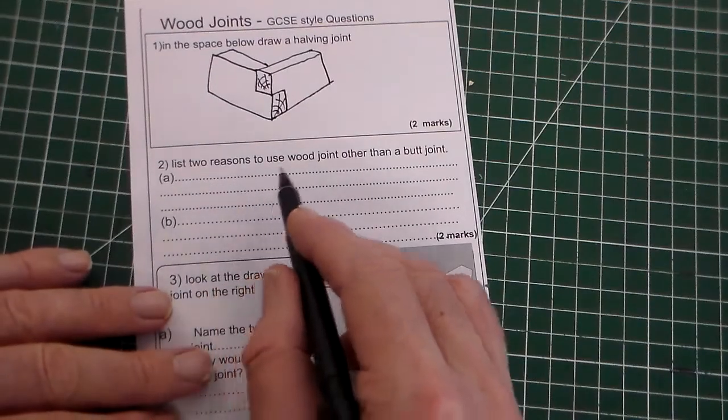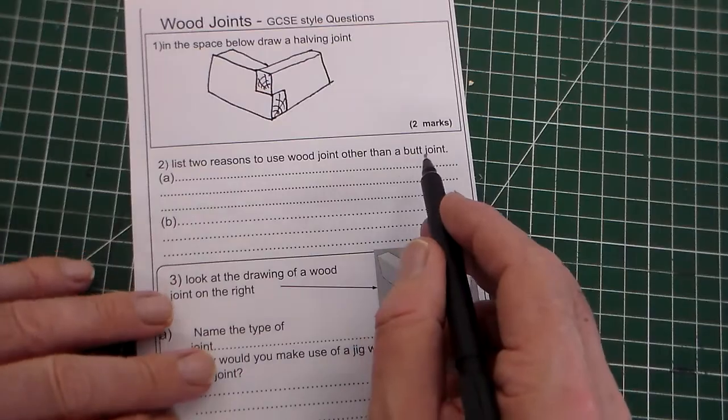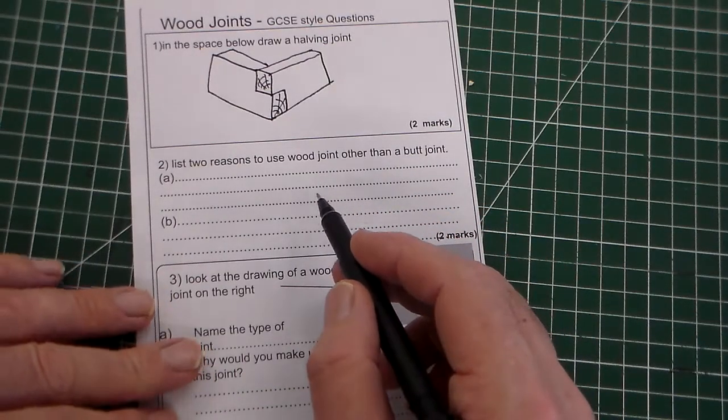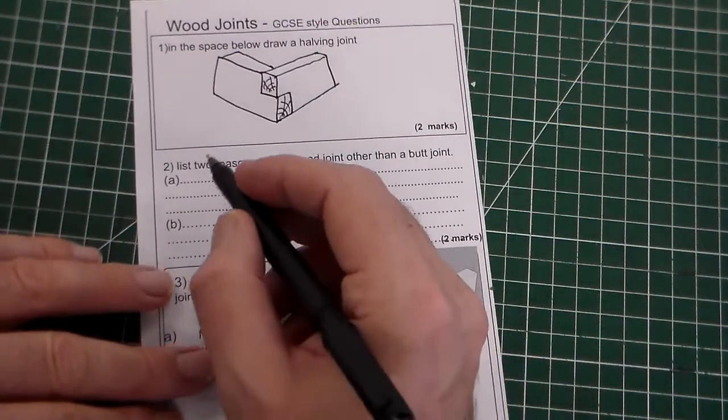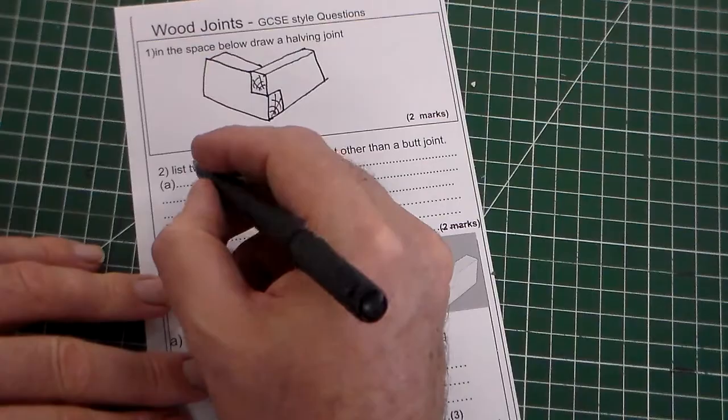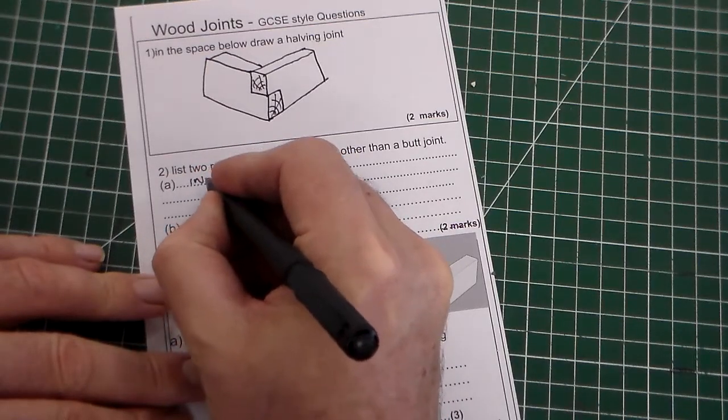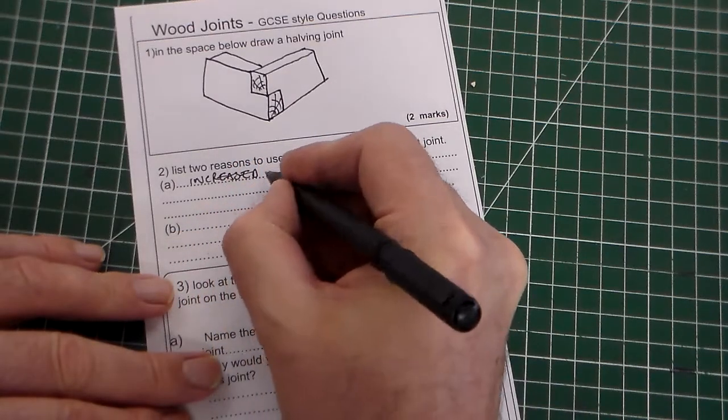Question two, list two reasons to use a wood joint other than a butt joint. So basically, why would you use a wood joint like a miter joint or something like that instead of a butt joint. So, A would be increased strength.